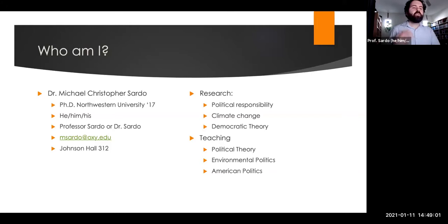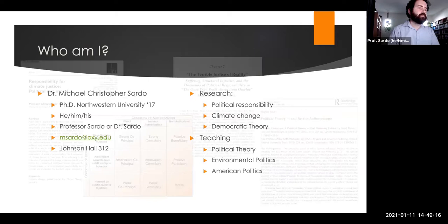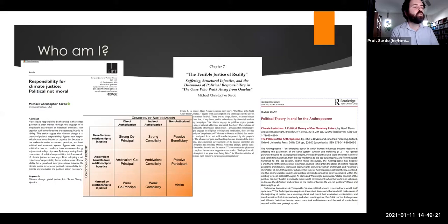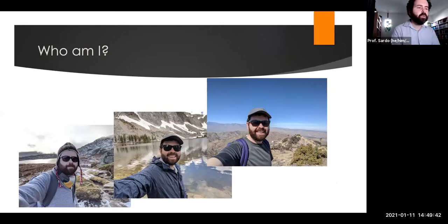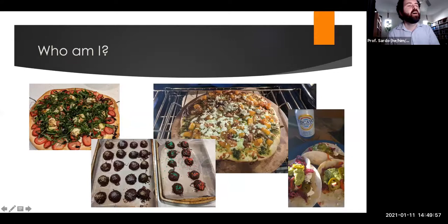In normal times my office was in Johnson Hall 312, but all office hours will be held virtually over Zoom. I'm trained primarily as a political theorist. I do research on questions of political responsibility, climate change, and democracy. I teach courses in political theory, the history of political thought, environmental politics, and American politics. Some of my recent research focuses on who should be held responsible for climate change and our individual responsibilities in the context of structural injustices.